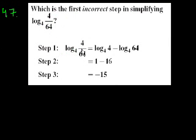Which is the first incorrect step in simplifying log base 4 of 4 over 64? Step one, they said log base 4 of 4 over 64 is equal to log base 4 of 4 minus log base 4 of 64. That's right. When you divide within the logarithm function, that's the equivalent of taking the log of the top one and subtracting from that the log of the bottom. And that's all a function of when you divide two numbers of the same base, you subtract their exponents.